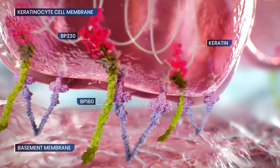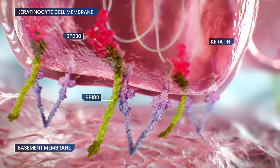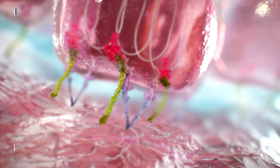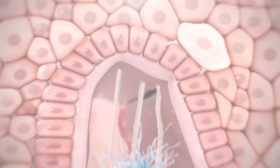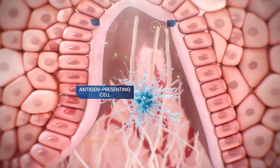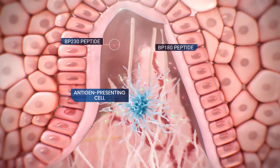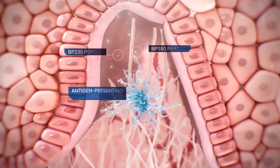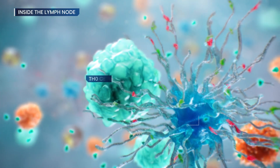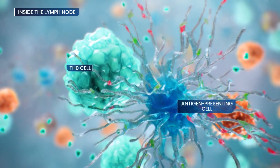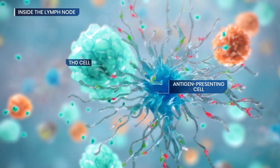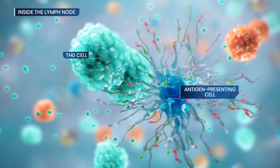Patients with BP lose immune tolerance and develop autoantibodies to these proteins. Consequently, antigen-presenting cells process and display peptides of BP-180 and BP-230 to naïve T cells in the lymph node, which subsequently stimulates autoreactive T cell proliferation.